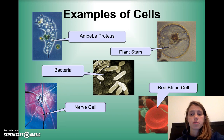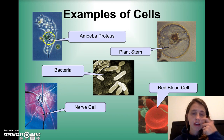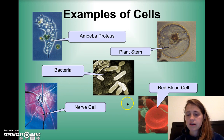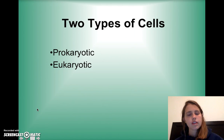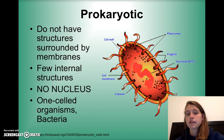So these are some examples. Some of you started to see some of these under the microscope recently. We have the amoeba, a plant stem, some bacteria, a red blood cell, a nerve cell — these are the kinds that are in your brain. And as you remember, there are two types of cells: prokaryotic cells and eukaryotic cells.